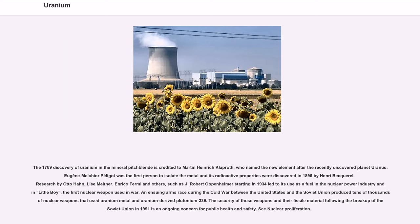The 1789 discovery of uranium in the mineral pitchblende is credited to Martin Heinrich Klaproth, who named the new element after the recently discovered planet Uranus. Eugène-Melchior Péligot was the first person to isolate the metal, and its radioactive properties were discovered in 1896 by Henri Becquerel. Research by Otto Hahn, Lise Meitner, Enrico Fermi and others starting in 1934 led to its use as fuel in the nuclear power industry and in Little Boy, the first nuclear weapon used in war. An ensuing arms race during the Cold War between the United States and the Soviet Union produced tens of thousands of nuclear weapons that used uranium metal and uranium-derived plutonium-239. The security of those weapons and their fissile material following the breakup of the Soviet Union in 1991 is an ongoing concern for public health and safety.